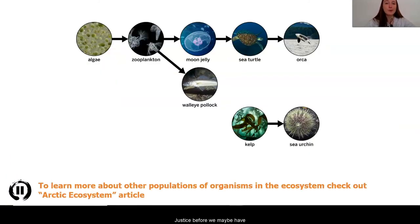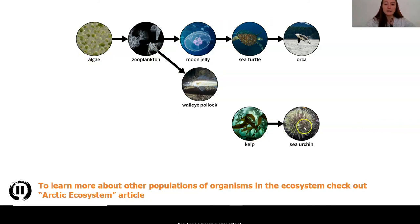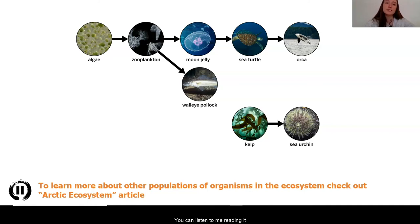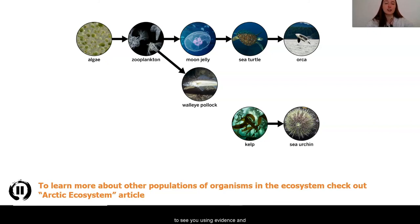Just as before, we maybe have answered some questions, but there is still so much left for us to understand. I noticed in the ecosystem there are so many more organisms than just the zooplankton and the sea turtles — are these having any effect? To learn more about the other populations of organisms in the ecosystem, I encourage you to check out the Arctic Ecosystem article if you haven't already. You can listen to me reading it in the voice recording, or if you have access to the article, you could read and annotate it yourself. Next time, we'll come back after having some time to think about what we think is occurring, and we'll start to investigate if there's any more to the story. You guys have done such great work, and I'm so excited to see you using evidence and critical thinking to help us understand what is happening to the moon jellies. See you next time!